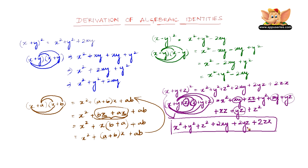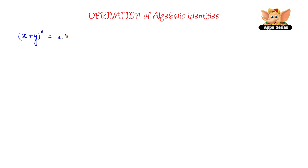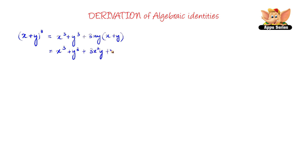We have a few more left. We have x plus y the whole cube. Now x plus y the whole cube can be written as x cube plus y cube plus 3xy into x plus y. Or equivalently, x cube plus 3x square y plus 3xy square plus y cube.